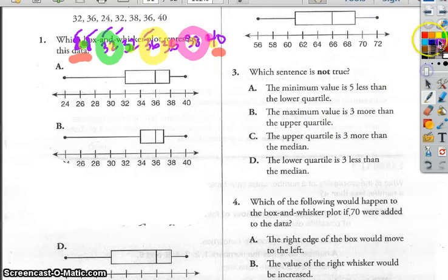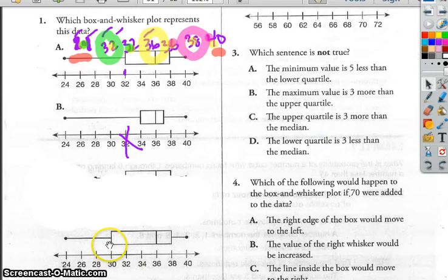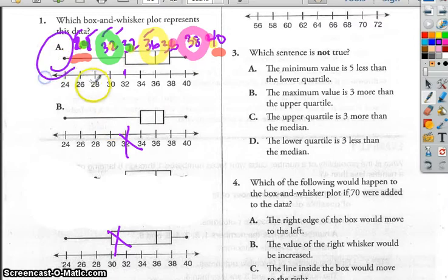Now, let's look at, we need 32. 32 is there. 32 is not there, so B is out. And let's go back and look at D. 32 is not in the correct place, so that one is out as well. 36 is in the right place here. 38 is in the right place here. And 40 is in the right place here. So A is the best answer choice for that one.